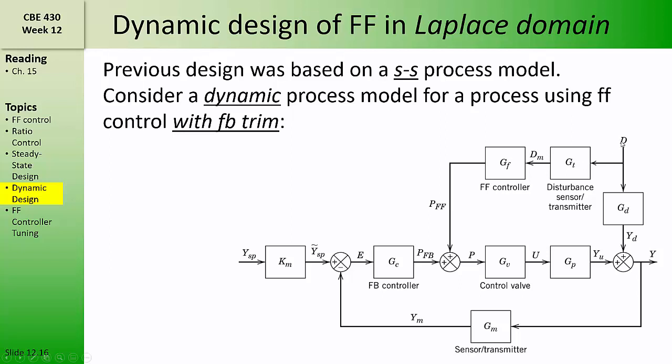In addition to being measured, that disturbance also has its own transfer function, whereby it affects the controlled variable y. This is the same GD that we had in our standard feedback control loop. So the only things that we've added here are the transfer function for the disturbance sensor, the feed-forward controller, and the summation in between the feedback controller and the control valve.